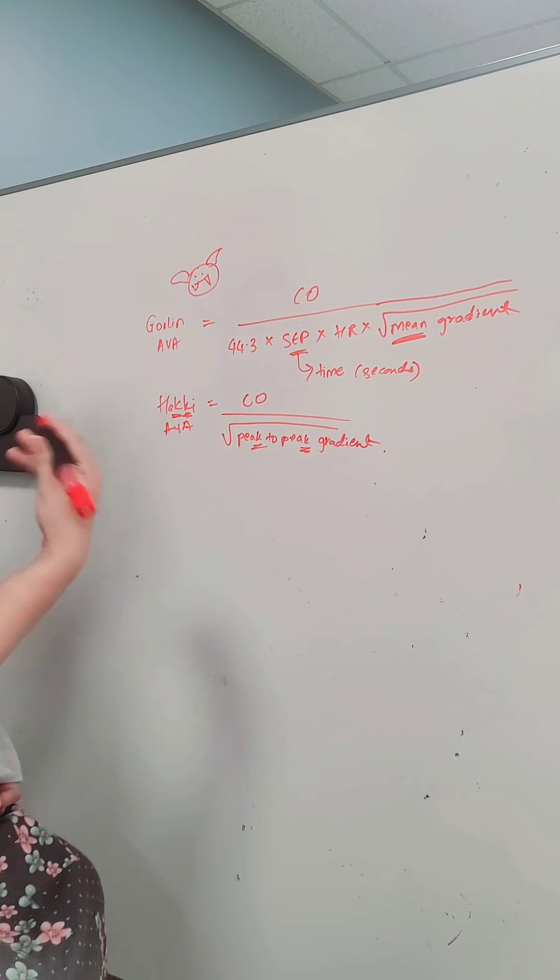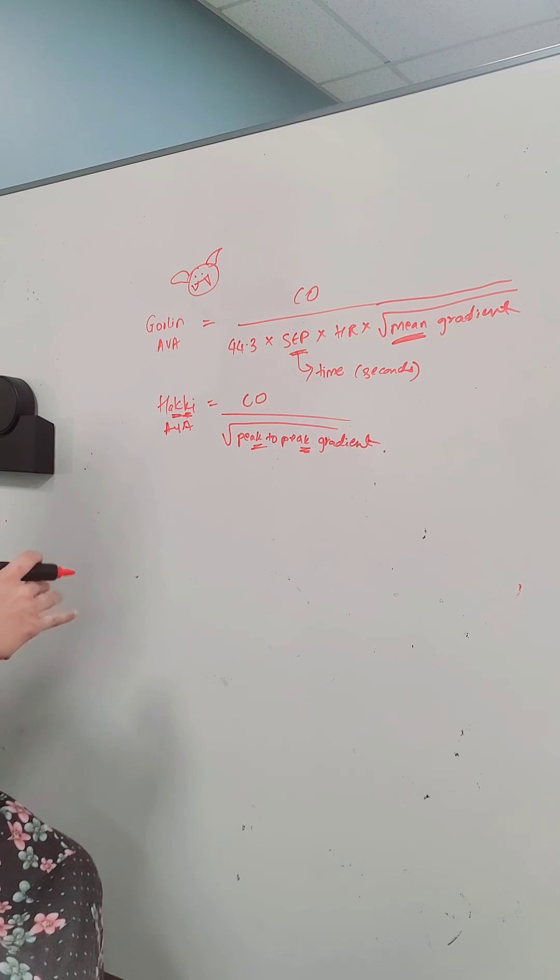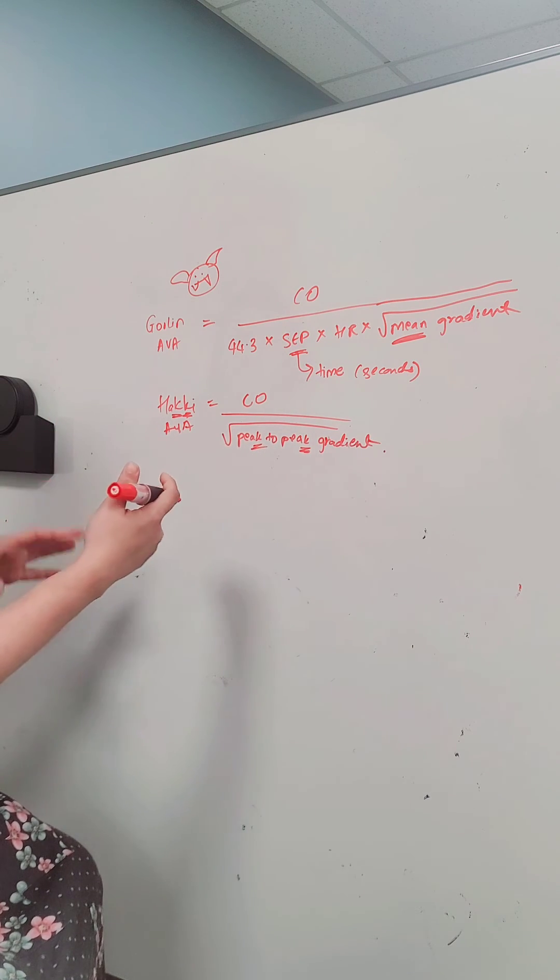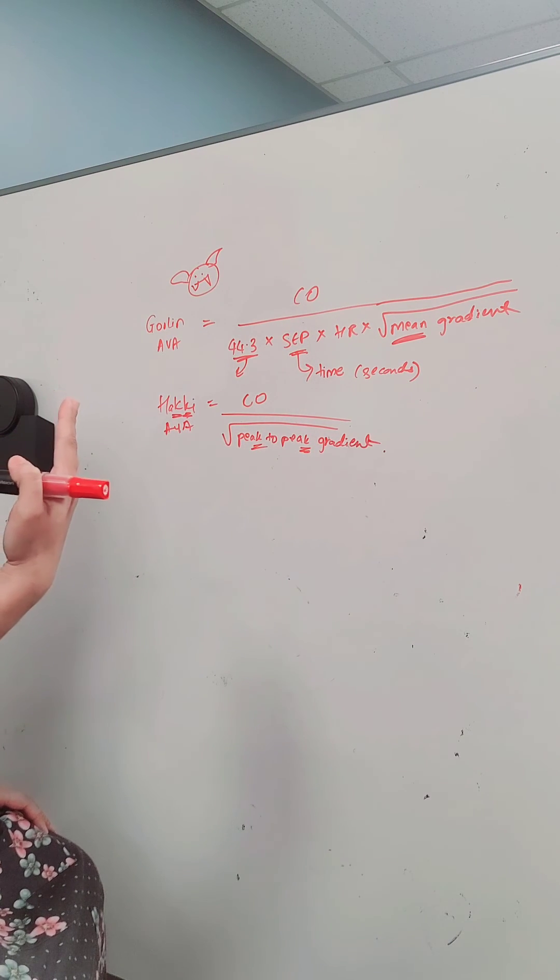And then since the Goblin is a mythical or made-up creature I think of hey I have to add a number to it. Obviously it's not a made-up number but that helps me remember 44.3.